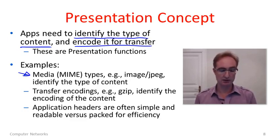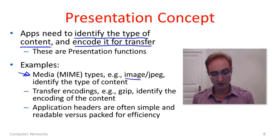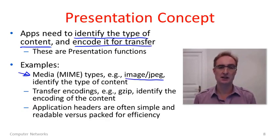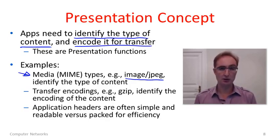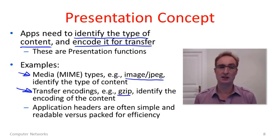A very common standard on the web for specifying the type of media is the so-called MIME types — Multipurpose Internet Mail Extensions — originally from email but more relevant today for the web. An example of a MIME type is 'image/jpeg'; others include 'text/html'. These MIME types identify the type of content, so application layer protocols will carry meta-information such as MIME types to describe the content being transferred. As well as content type, there's also a transfer encoding — for instance gzip — which describes the format used to send the content across the network, distinct from the content type itself.